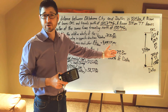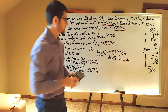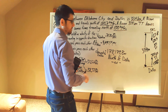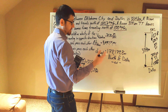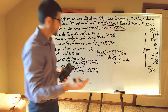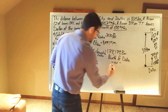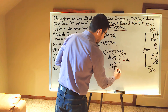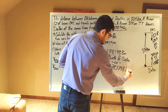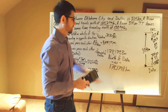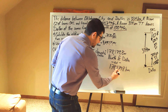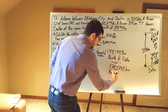We could convert this to kilometers. Since there are 1,000 meters in every kilometer, we divide by 1,000, giving us approximately 178.18 kilometers north of Dallas.